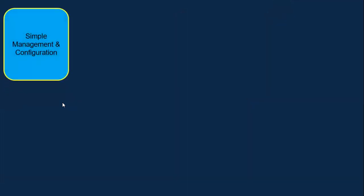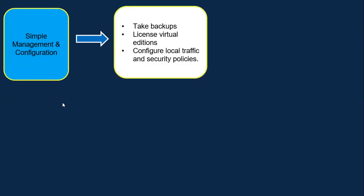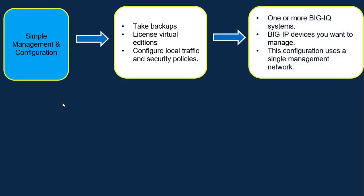The first deployment option available is simple management and configuration. This depends on what tasks you want to perform using BigIQ. If you want to perform simple tasks like taking backups, license management, or configuring local traffic and security policies, then you go with simple management. The components required are one or more BigIQ CM and the BigIP devices you are going to manage. This deployment uses a single management network throughout.